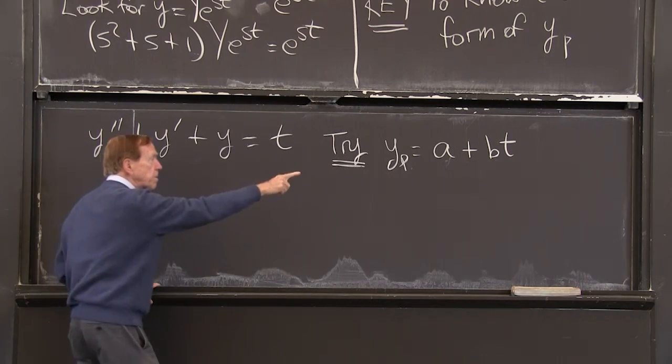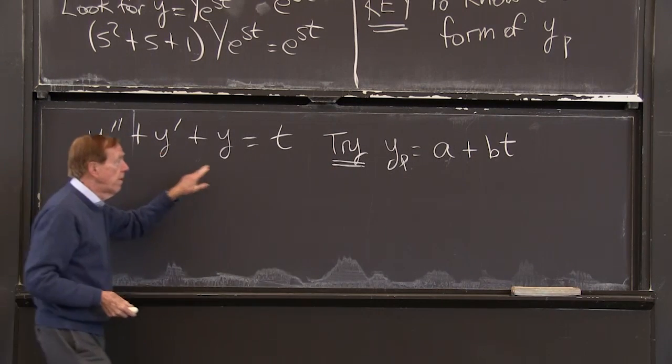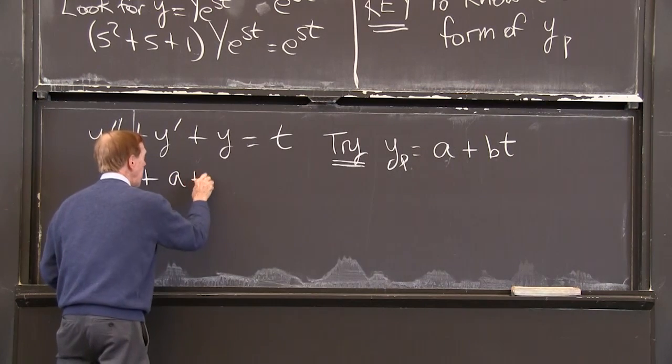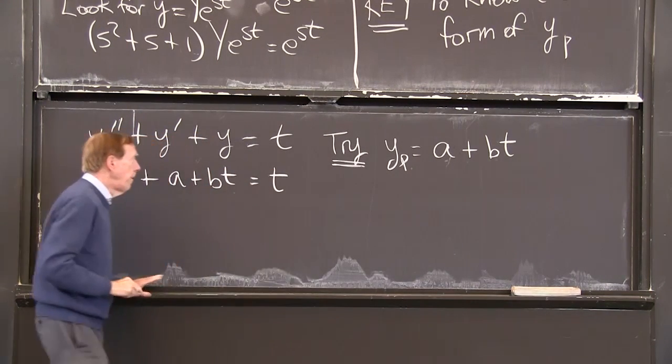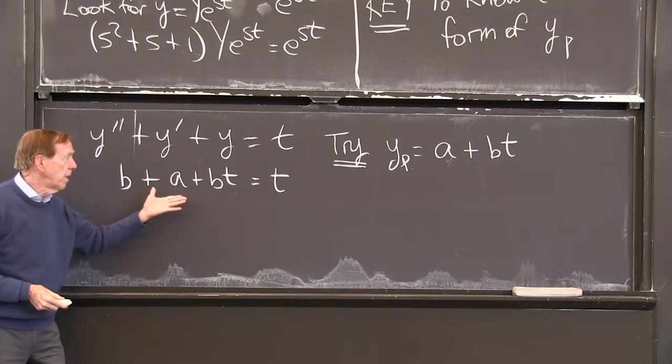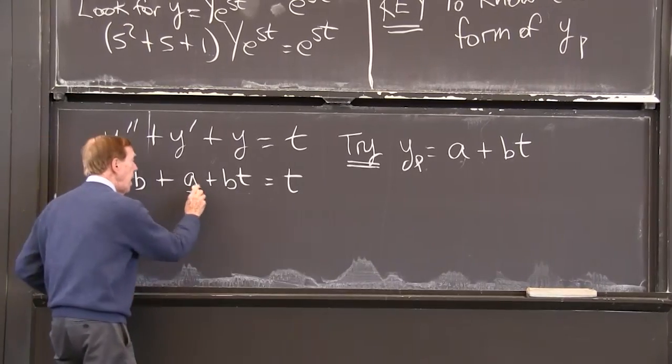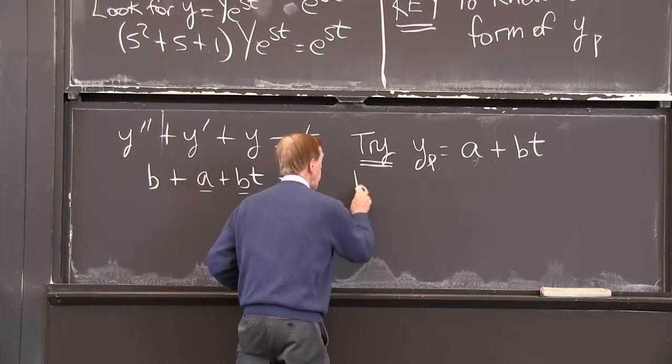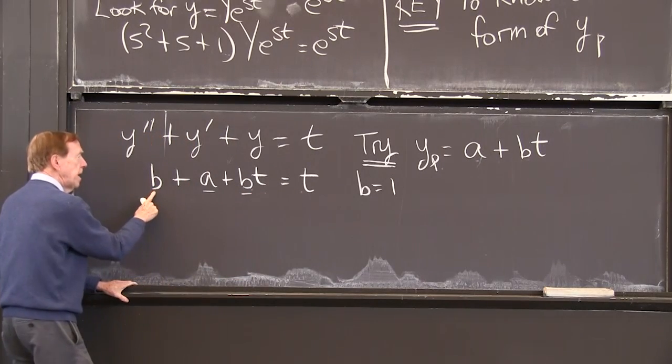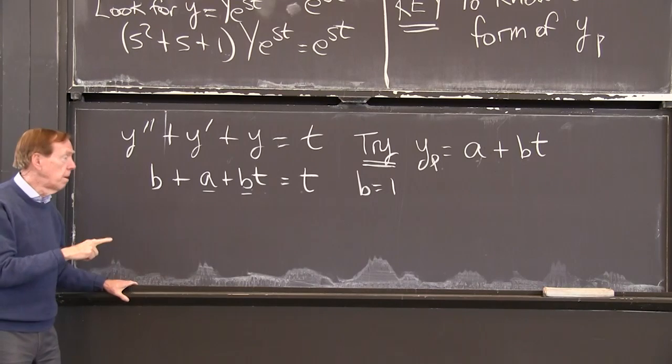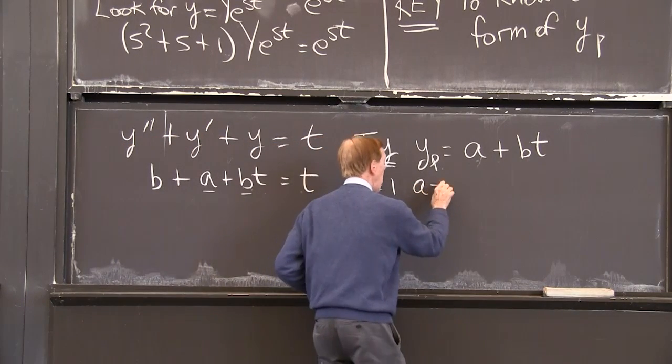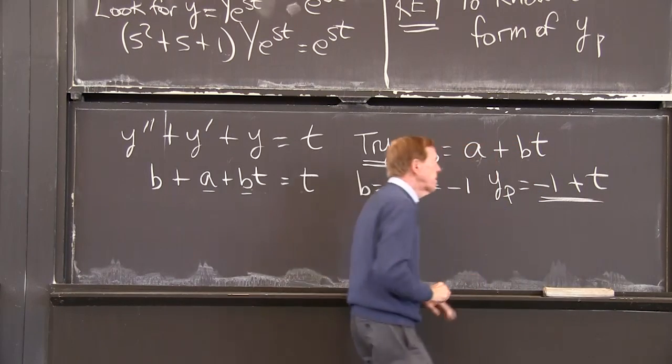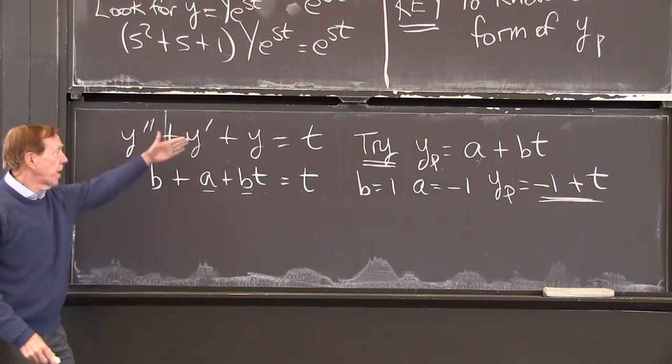Try y_p as a plus bt in this equation. The second derivative of a plus bt is 0. The first derivative of that is b. So I get a b from that, and y itself is a plus bt. And that's supposed to give t. You see, I plugged it in. I got to this equation. Now I can determine a and b by matching t. So that b has to be 1, we get b equal 1. But if b is 1, I need a to be minus 1 to cancel that. So a is minus 1, and my answer is minus 1 plus 1t, t minus 1.